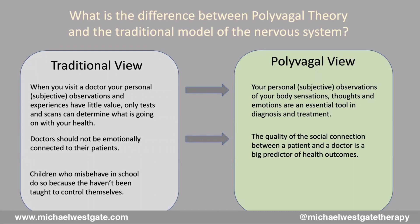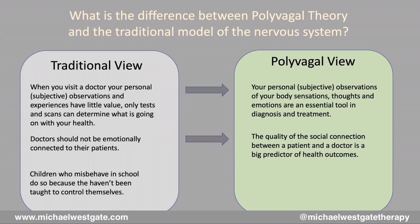The traditional view sees children who misbehave or have trouble learning in school as simply not having been taught to control themselves. In the polyvagal view, the only reason children misbehave in school is because they don't feel safe — and it's very likely they don't feel safe at home either. When they're helped to find safety in that situation, they will automatically become cooperative without having to be forced.